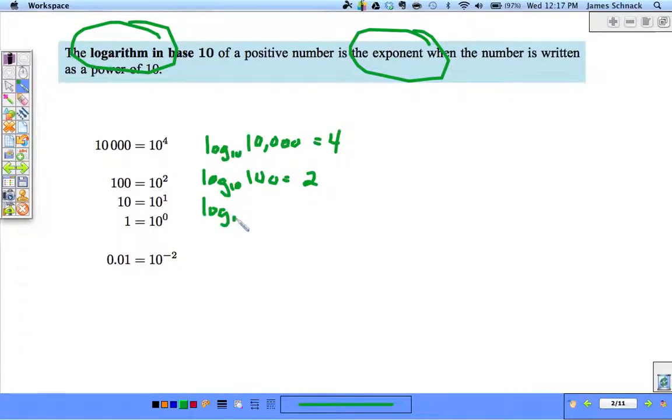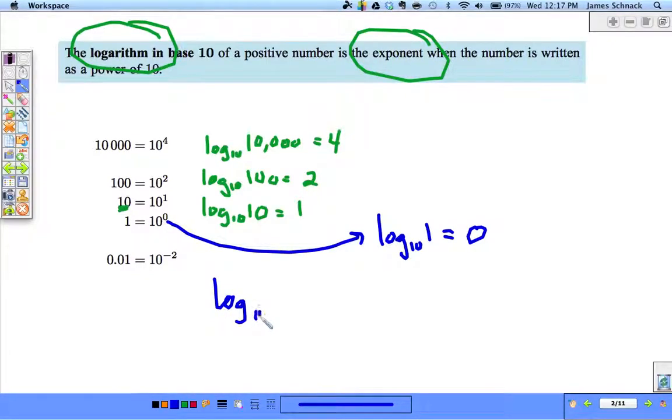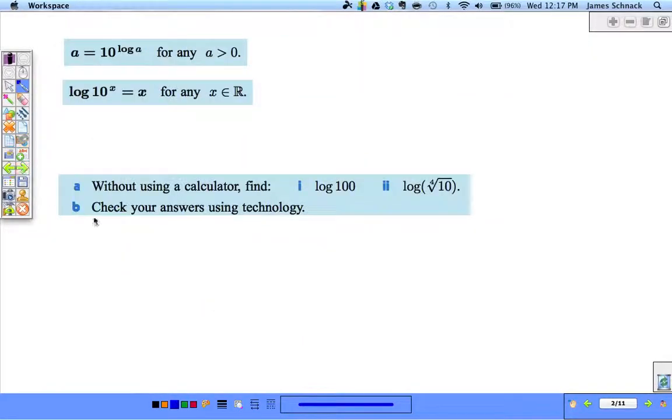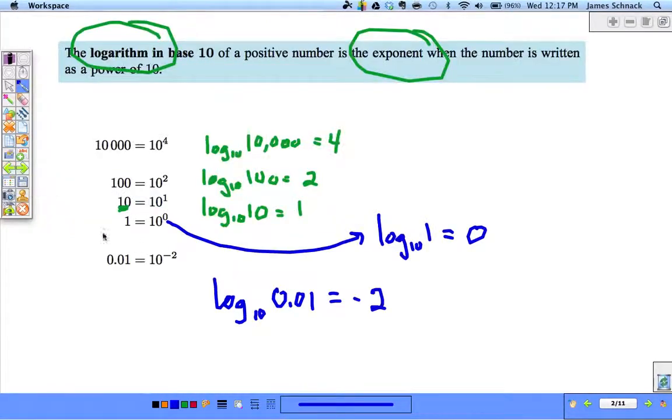Log base 10 of 10, what's the exponent? 1. Log base 10 of 0.01 is equal to negative 2. So a couple of properties here and then we'll come back to this idea of rewriting exponential things in logarithm form.